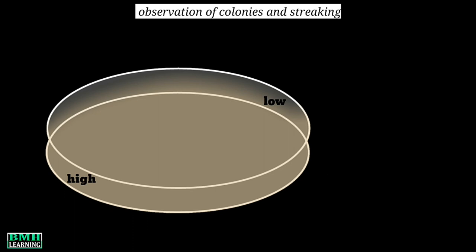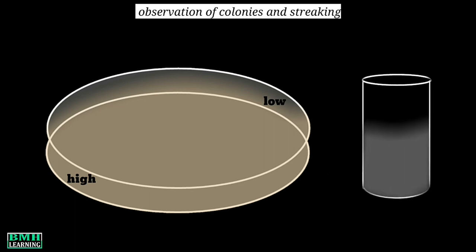The second step is observation of colonies and streaking. This is the E. coli bacterial culture we are going to inoculate. Using a sterile 1 ml pipette, 0.2 ml of the E. coli test culture is added onto the plate. Then, with the help of a bent glass rod dipped in alcohol and flamed, we spread the test culture over the entire agar surface. The plate is then incubated for 24 hours at 37 degrees centigrade.